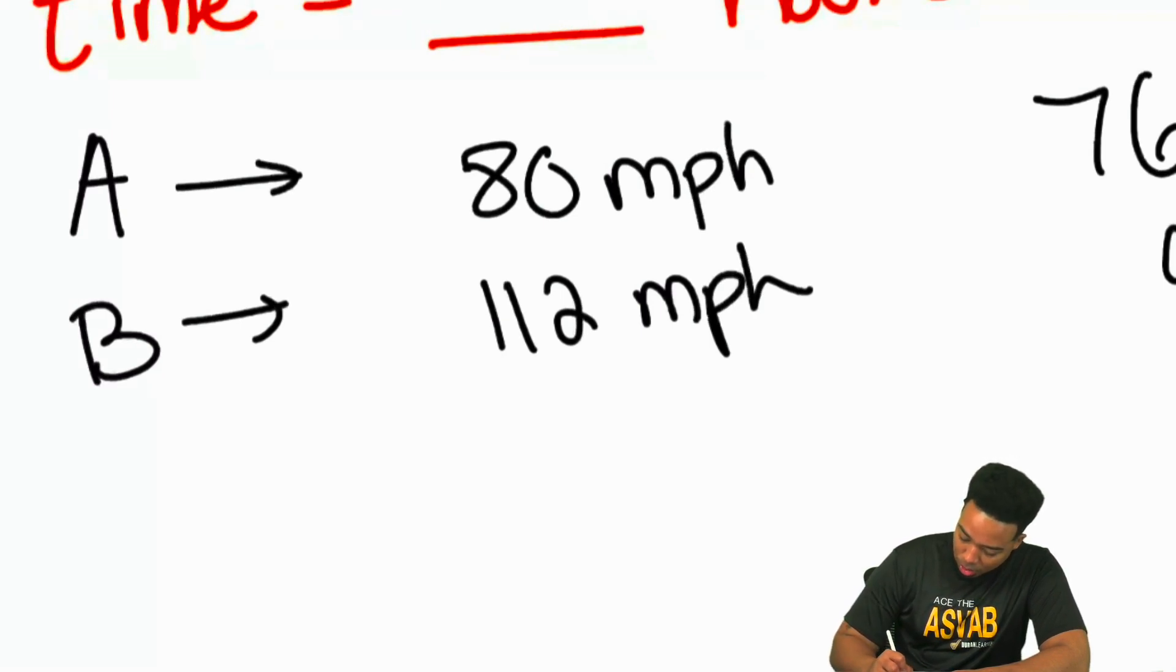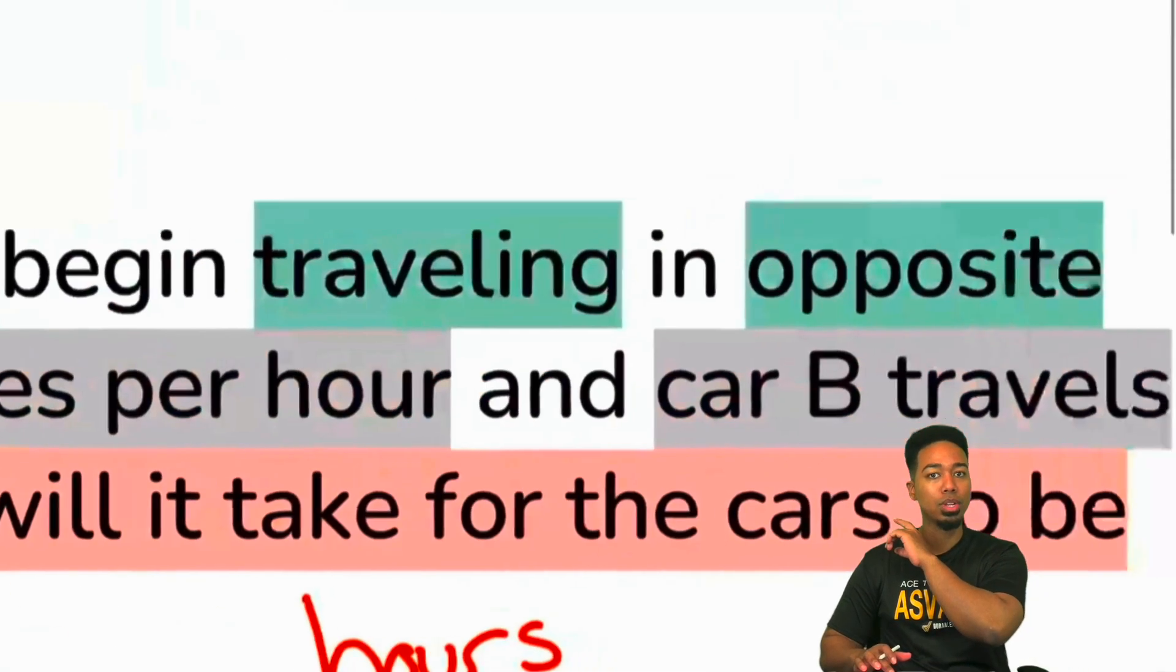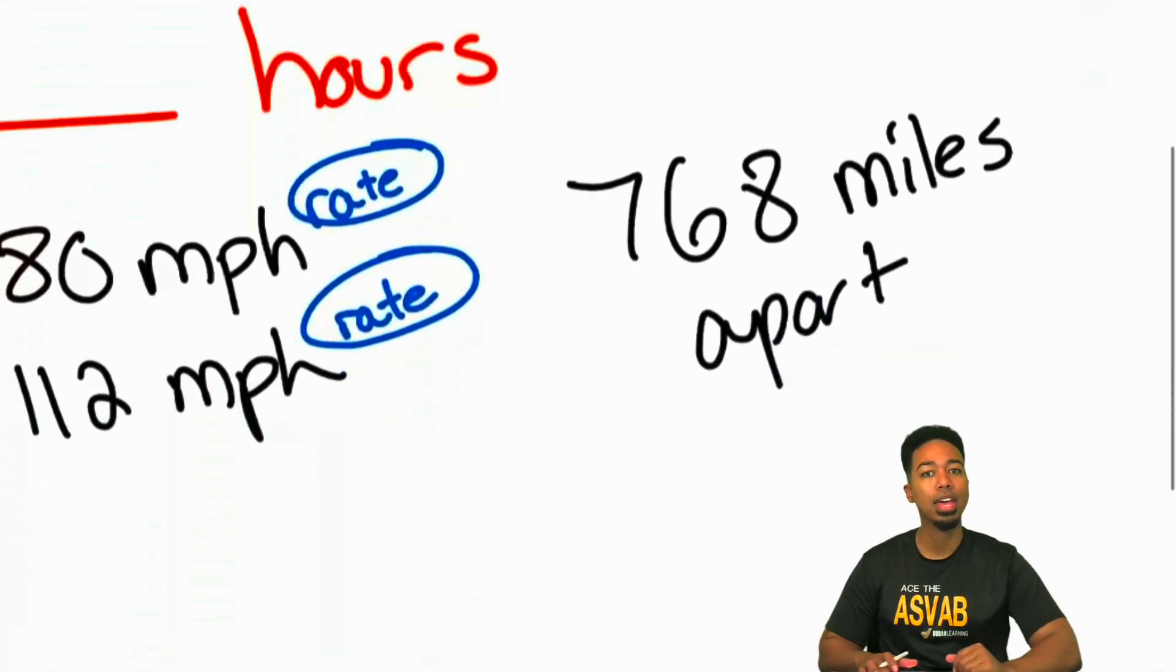Saying how much of this for every one of that. 80 miles for every one hour, 112 miles per one hour, that is a rate. So we have a rate here and a rate here. That might be an issue, and again, that's going to be rooted in the green highlight. We will talk about that in a moment.